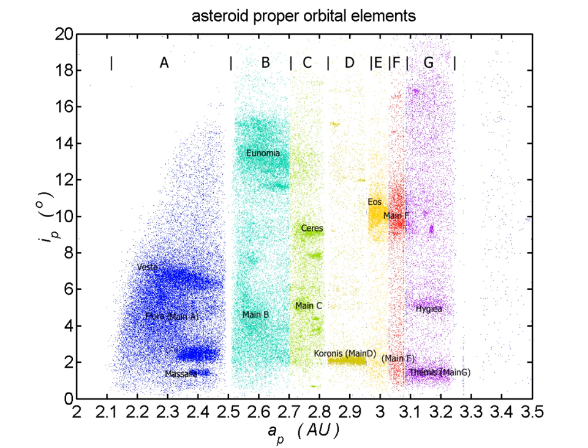Asteroid families are thought to have lifetimes of the order of a billion years, depending on various factors e.g. smaller asteroids are lost faster. This is significantly shorter than the solar system's age, so few if any are relics of the early solar system.